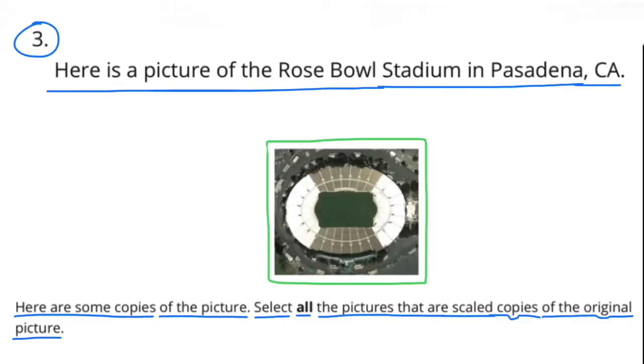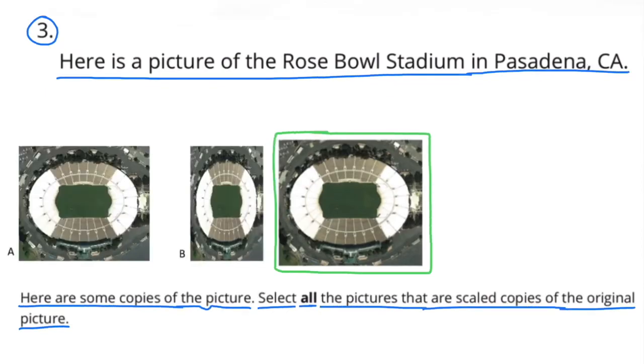Number three: Here is a picture of the Rose Bowl Stadium in Pasadena, California. Here are some copies of the picture. Select all the pictures that are scaled copies of the original picture. Here's a look at pictures A and B in comparison to the original picture outlined in green.